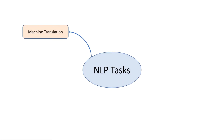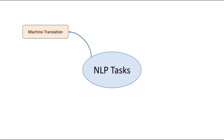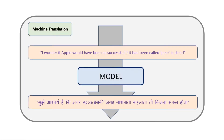Let's start with machine translation. The task is in the name. The input to the model is a sentence from the source language, and the output of the model is the same sentence translated into the target language. In this example, we can see the English statement, 'I wonder if Apple would have been as successful if it had been called Peer instead,' translated into Hindi.